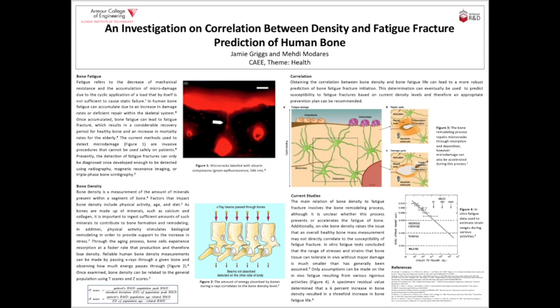As for bone density, it refers to a measurement of the amount of minerals present within a segment of bone. Factors that can impact bone density include physical activity, age, and diet. Since bones are made up of minerals such as calcium and collagen, it is important to ingest sufficient amounts of such minerals to contribute to bone formation and remodeling. Physical activity stimulates biological remodeling in order to provide support to the increase in stress. Through the aging process, bone cells experience resorption at a faster rate than production and therefore they lose density.